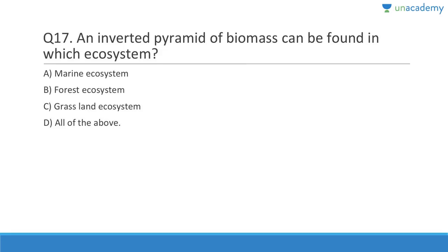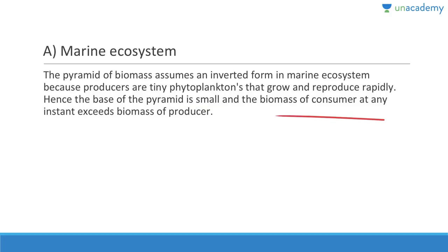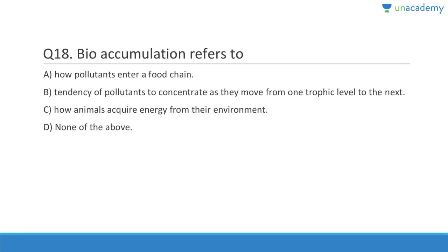Question 17: An inverted pyramid of biomass can be found in which ecosystem? The answer is a marine ecosystem, because blue whales are huge but planktons do not weigh much. The pyramid of biomass assumes an inverted form in marine ecosystems because tiny phytoplanktons grow and reproduce rapidly — the base of the pyramid is small, and the biomass of consumers at any instant exceeds the biomass of producers.